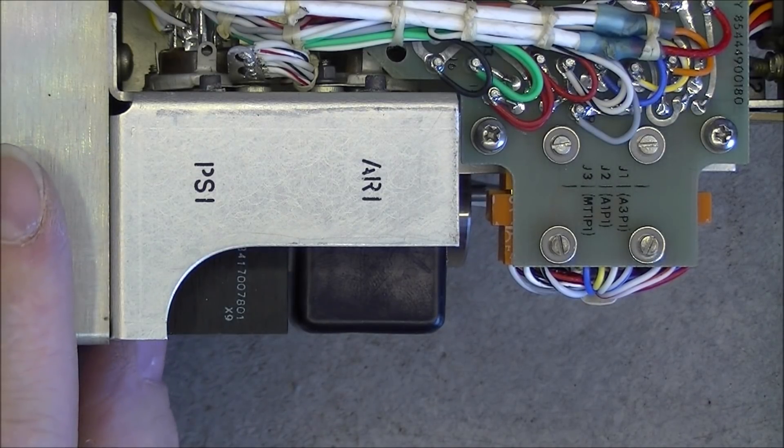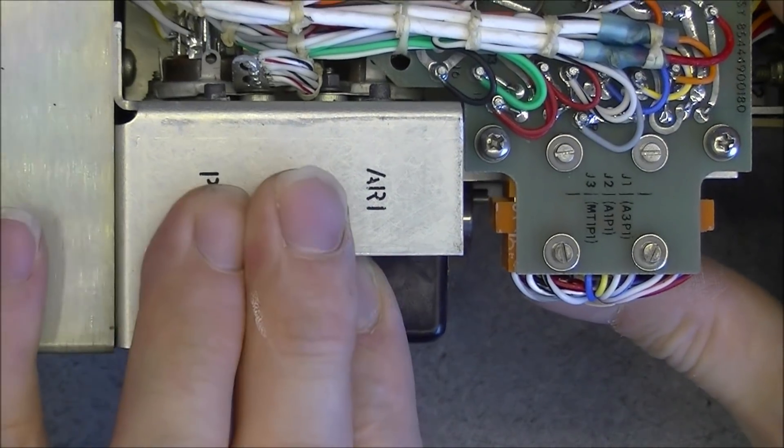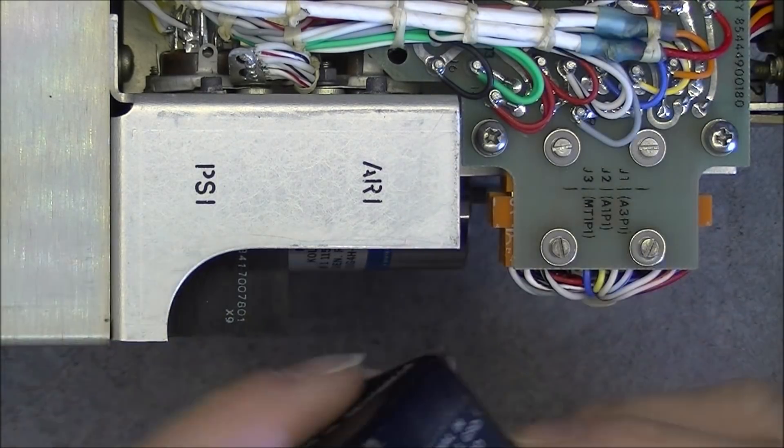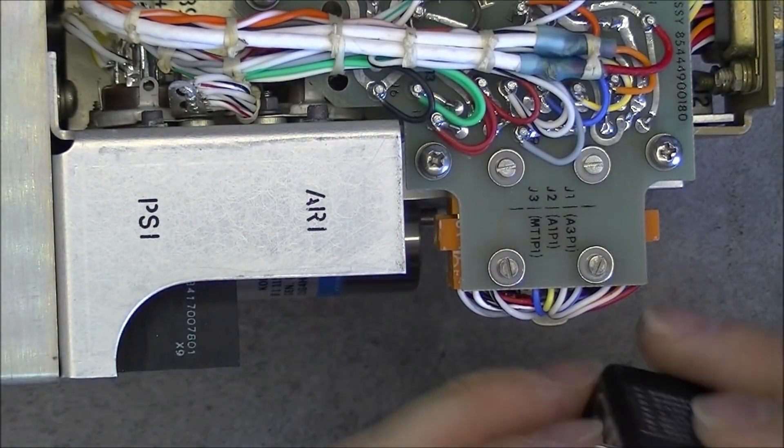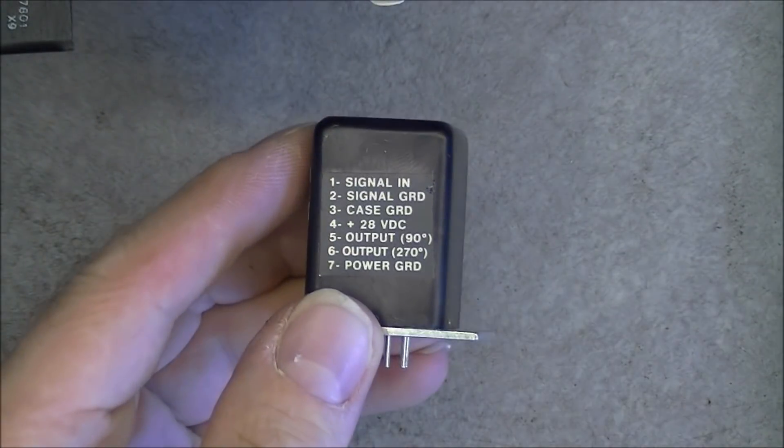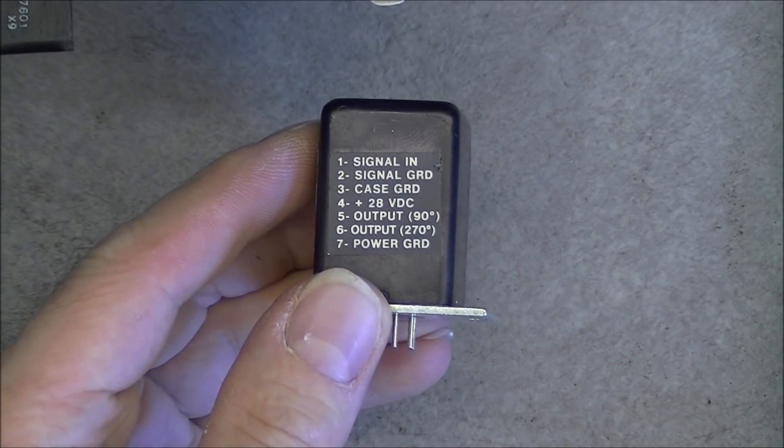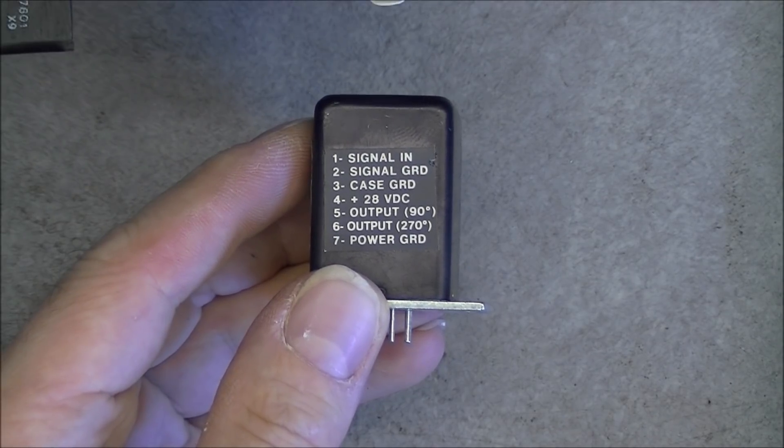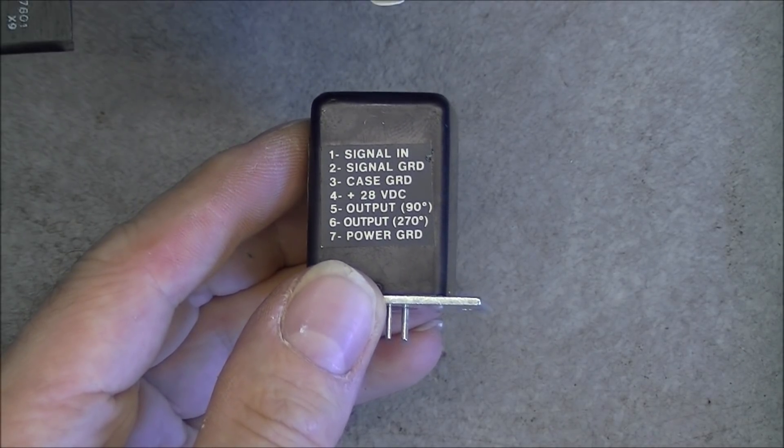So I did unscrew the two modules here. And slowly enough, I can pull them. It is just a tube socket. Interesting. Here is the first one. Signal in, signal ground, case ground, 20V, 8V supply, output with phase shift and power ground.